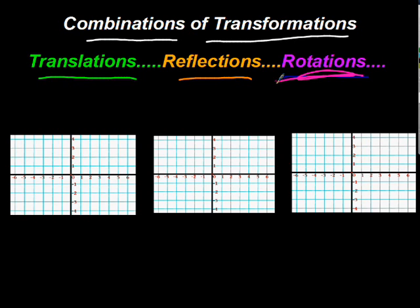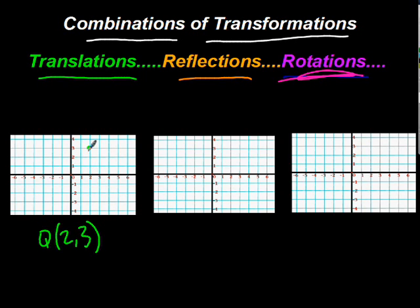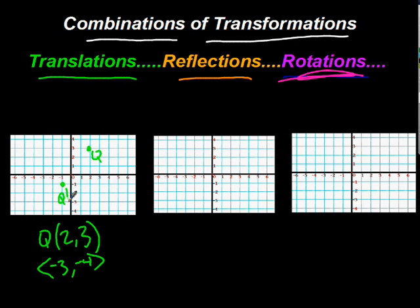Let's do some examples. Let's say we have some point Q at (2, 3) — right there — and I'm going to want to translate it by negative 3, negative 4. I'll take this point and go 1, 2, 3 in the negative x direction, and 1, 2, 3, 4 in the negative y direction. This will be Q and this will be Q prime — that's a translation.